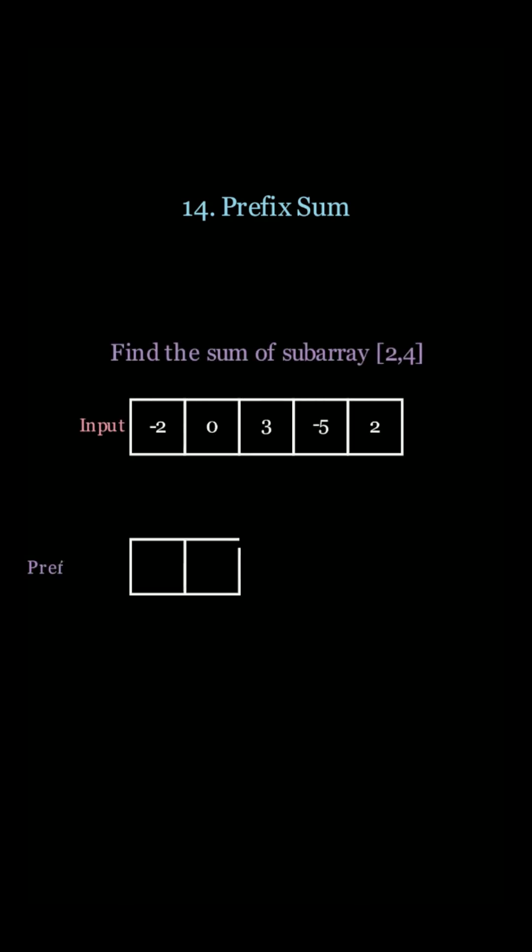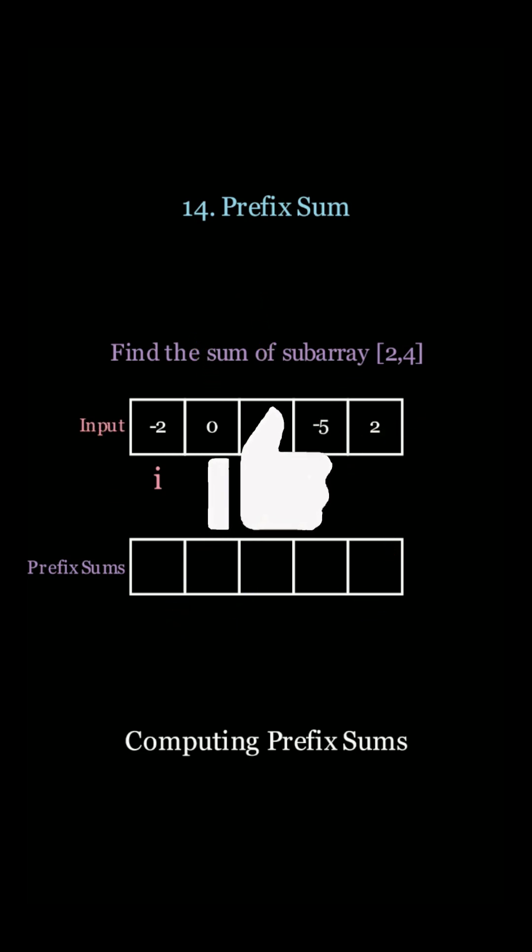Let's take a look at an example. We want to find the sum of the subarray 2 to 4. However, just imagine that we have other queries. What if we wanted to find the sum of the subarray from 2 to 4, from 1 to 3, from 0 to 2, etc.